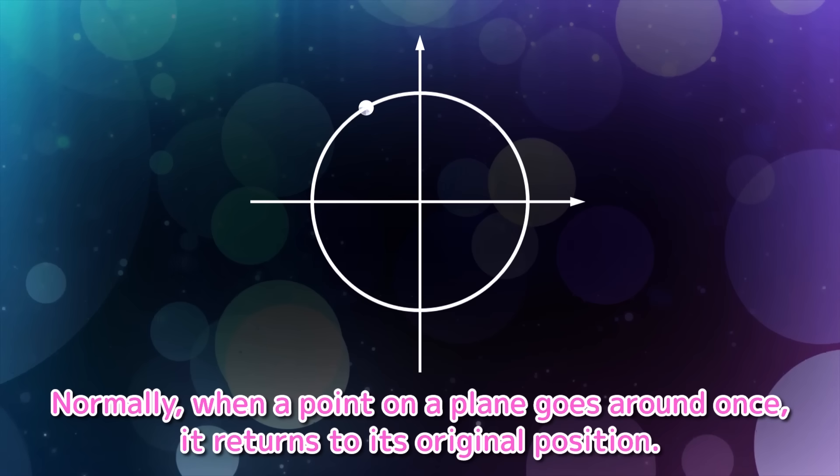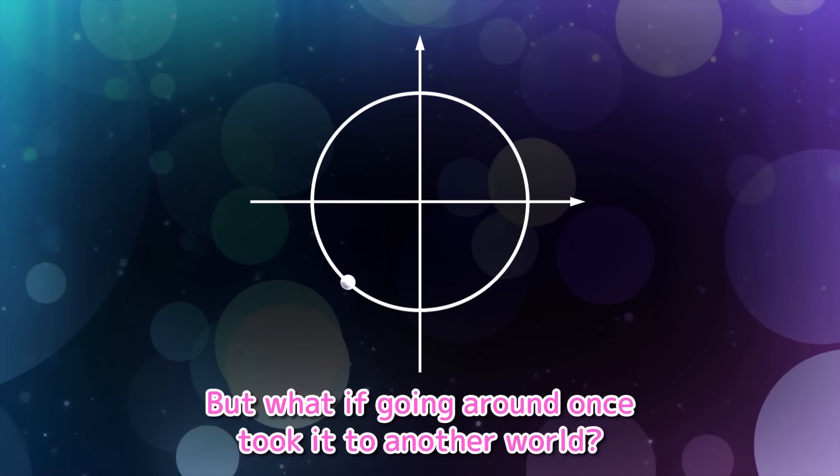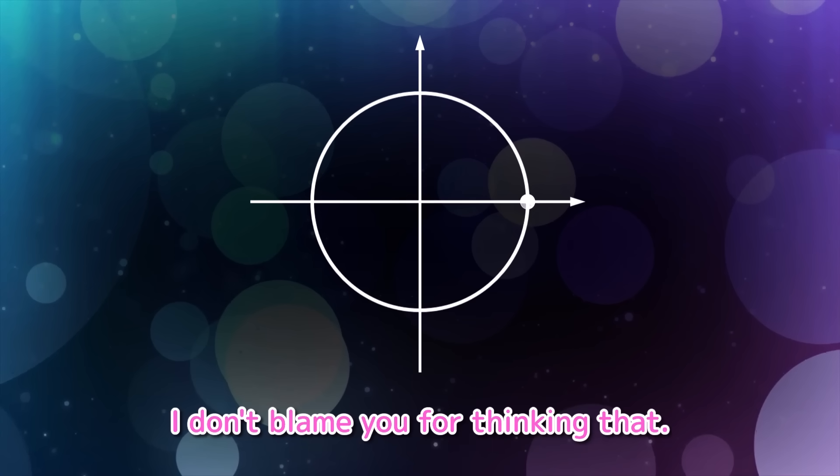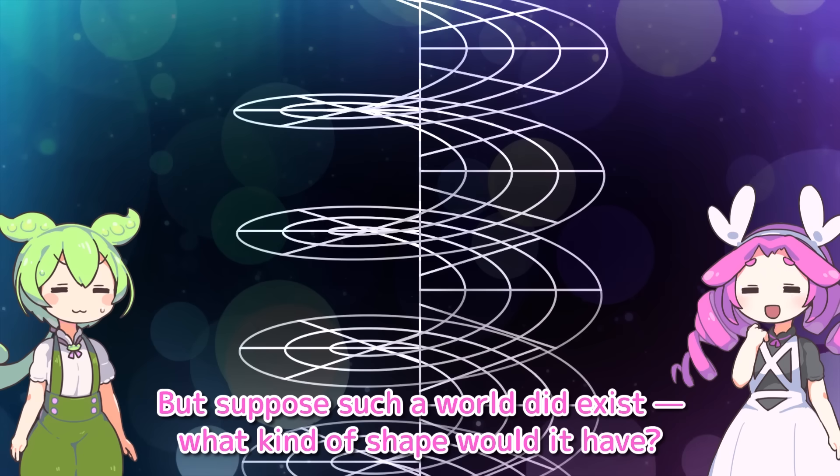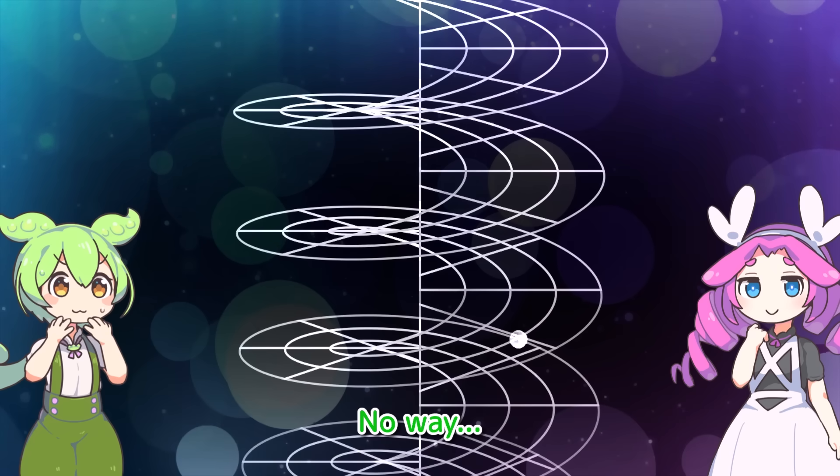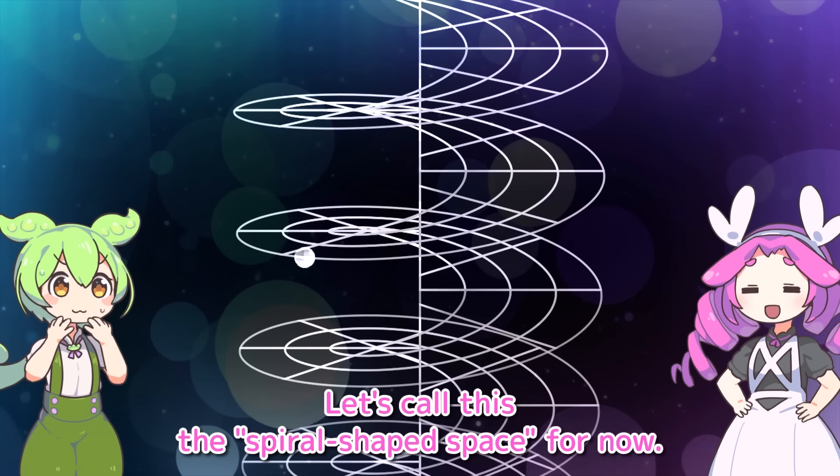Normally when a point on a plane goes around once, it returns to its original position. Yeah, that's true. But what if going around once took it to another world? What? That's impossible. I don't blame you for thinking that. But suppose such a world did exist? What kind of shape would it have? No way! Okay, that is exactly this space.